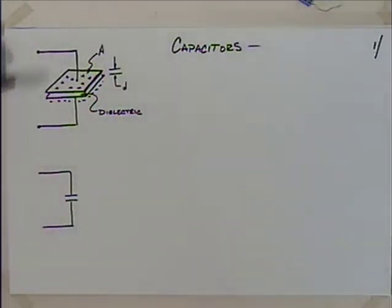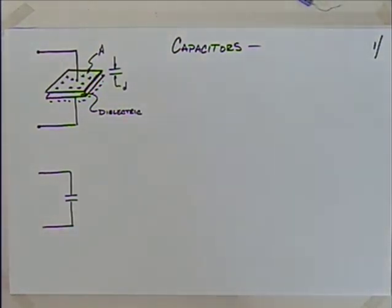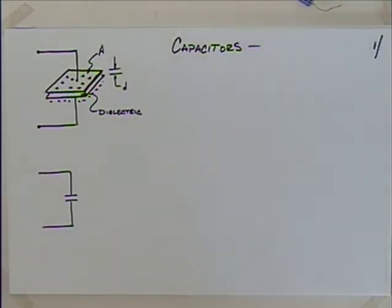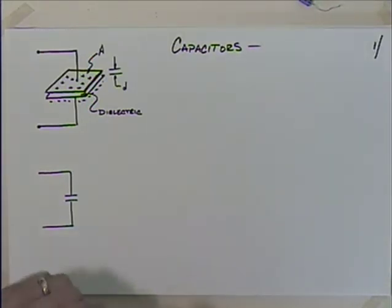Welcome back to Engineering 201, Electrical Fundamentals. We have finished talking about operational amplifiers. I want to move forward and start looking at energy storage elements. The two energy storage elements we're going to talk about are capacitors and inductors. We'll start by talking about capacitors and then move on to inductors.